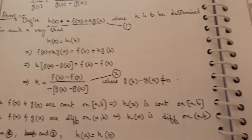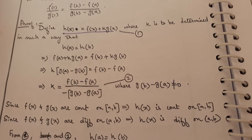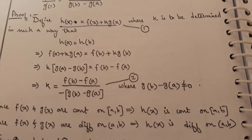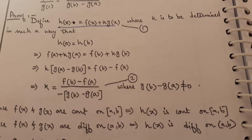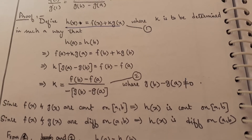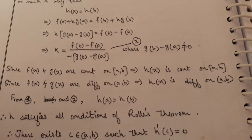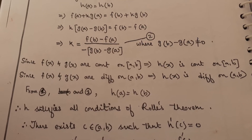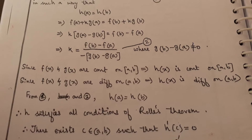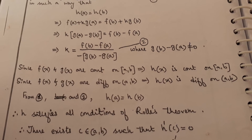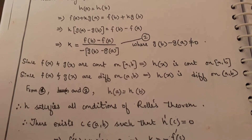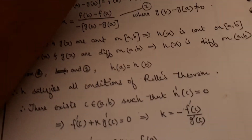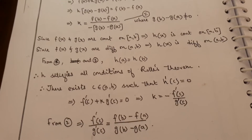Proof. Define h(x) = f(x) + k·g(x), where k is to be determined such that h(a) = h(b). Setting h(a) = h(b): f(a) + k·g(a) = f(b) + k·g(b). Taking k as common: k·[g(a) - g(b)] = f(b) - f(a), so k = [f(b) - f(a)] / [-(g(b) - g(a))]. Take this as equation two, where the denominator is not equal to zero — if it equals zero, k would be undetermined.